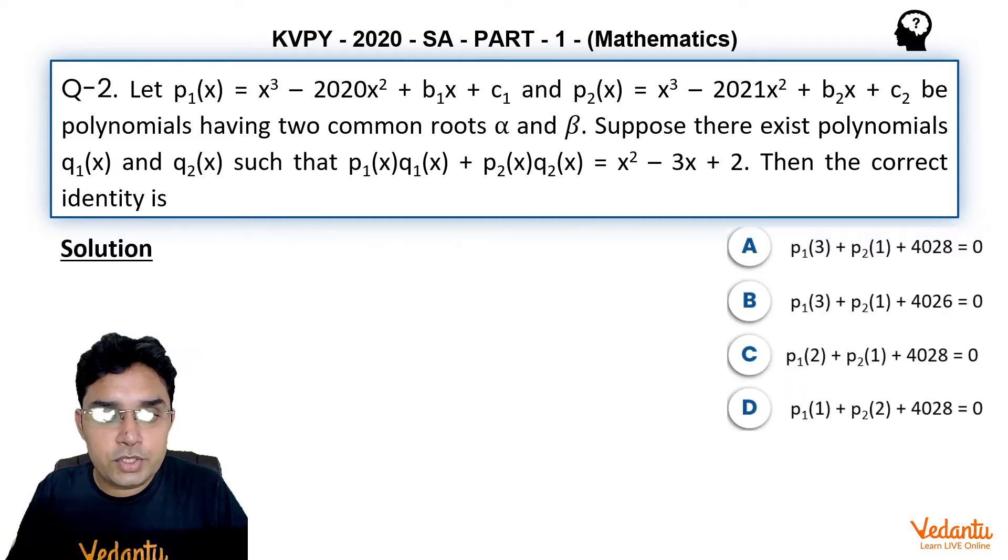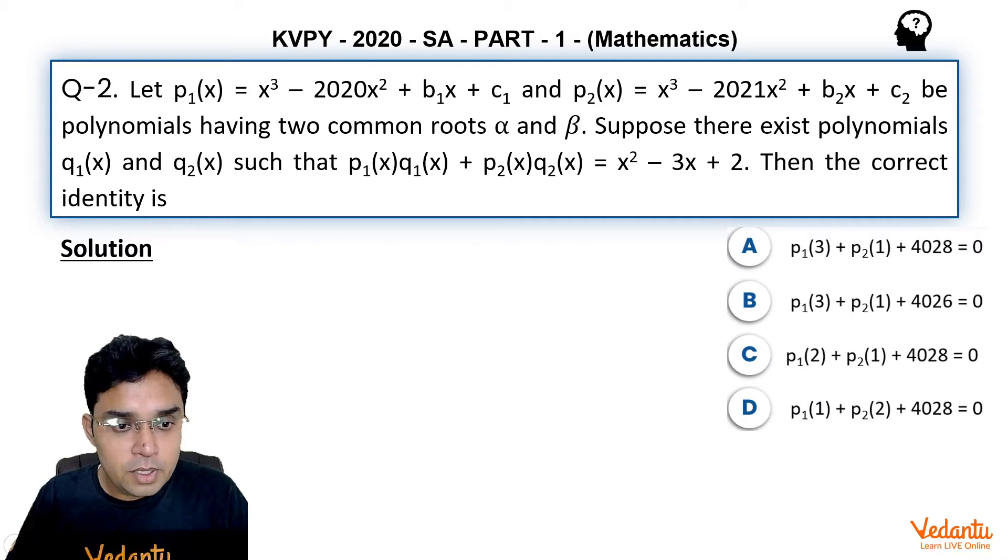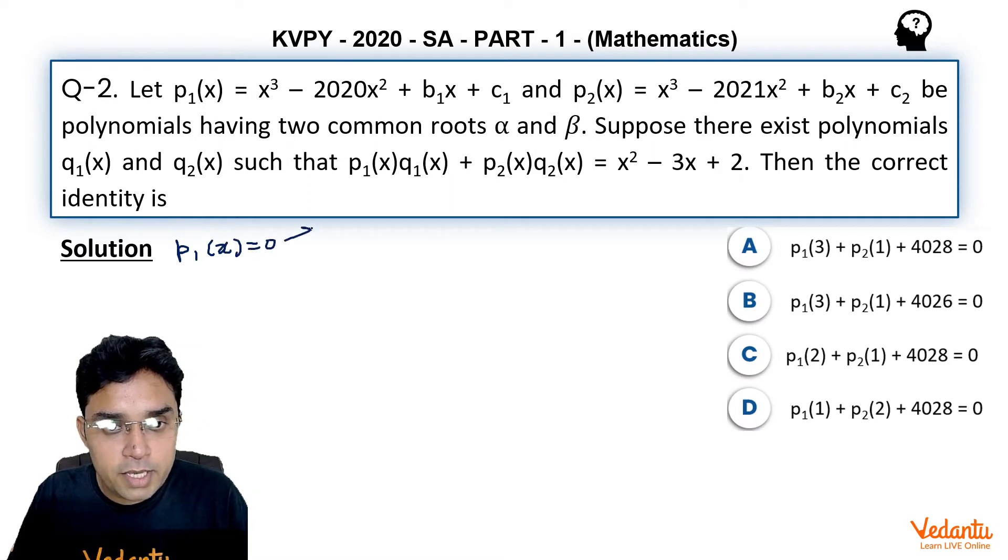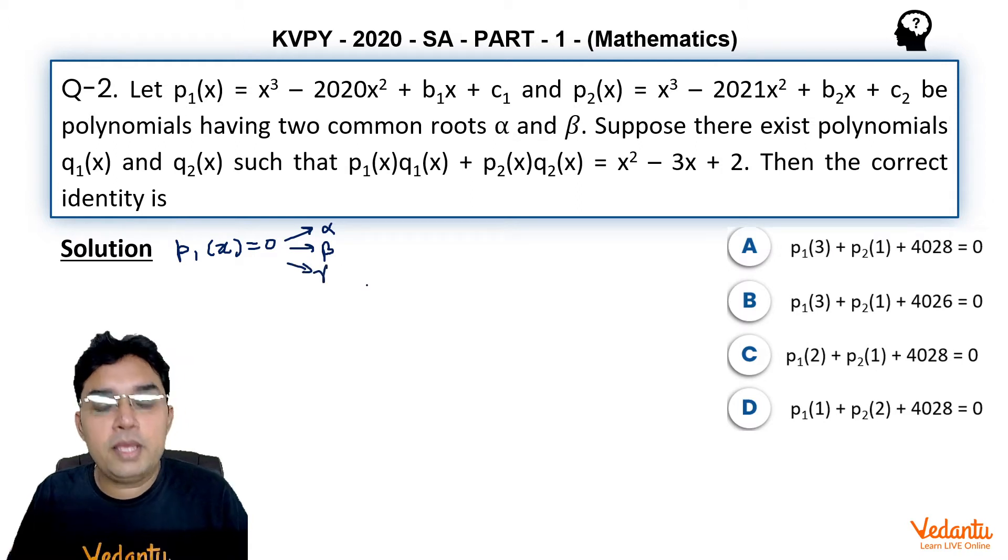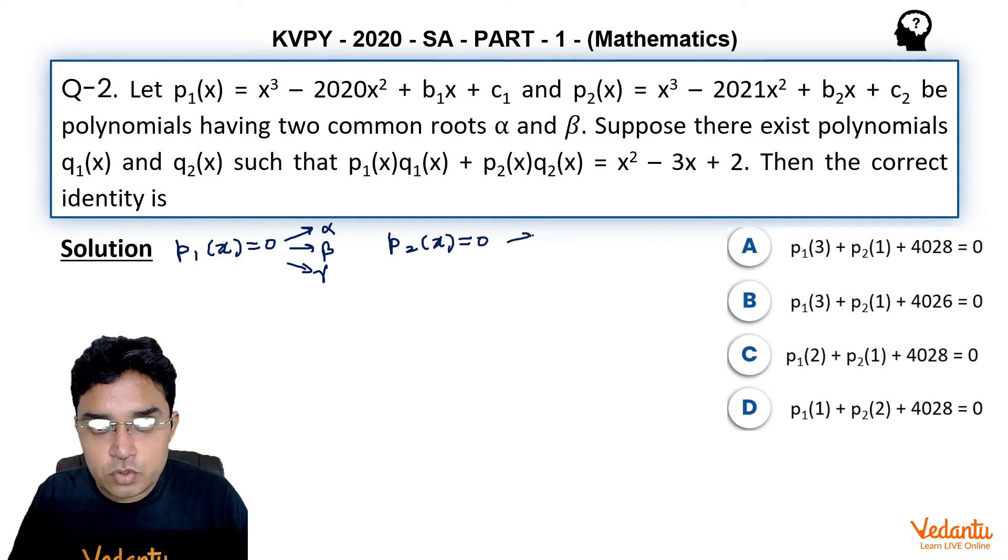Now to solve this question, let us assume that p₁(x) = 0 is having roots as α, β, and the third uncommon root be γ. Similarly, for p₂(x) = 0, we can assume this to be α, β, and δ.